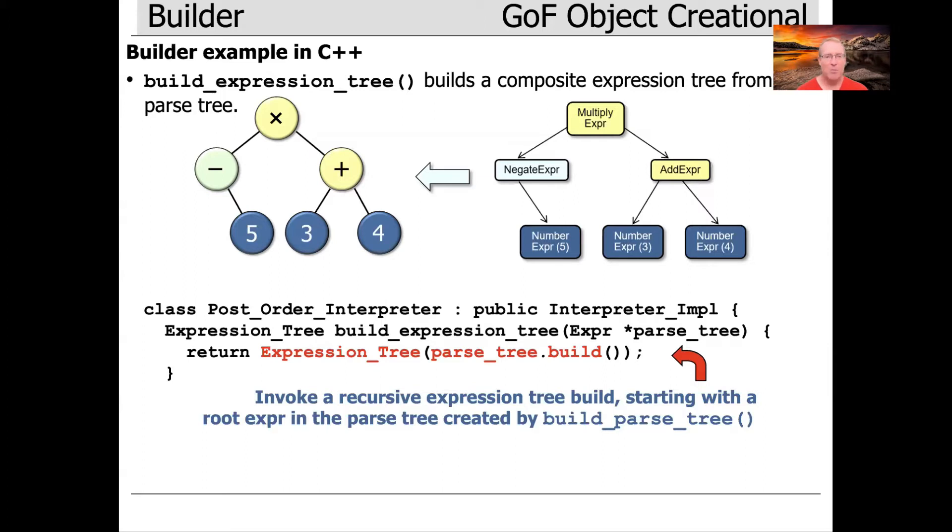And then what we get back from the build will be essentially a component node pointer, and then we pass that to the expression tree constructor, which will wrap the expression tree abstraction around the underlying composite expression tree nodes.